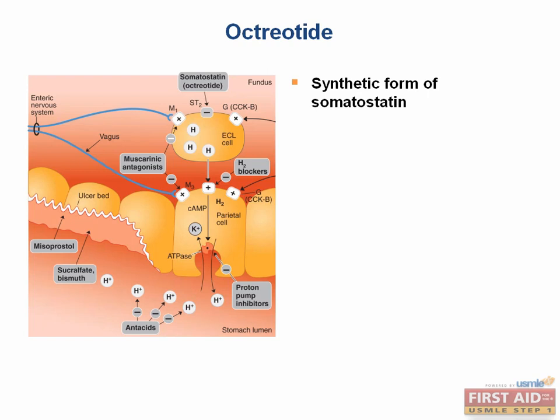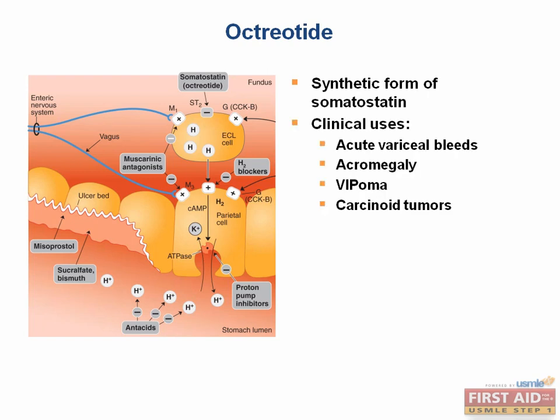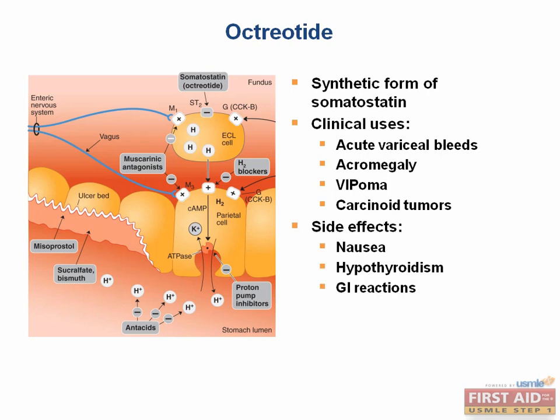From these effects, it can thus be determined that octreotide is used to treat acute variceal bleeds, acromegaly, VIPoma, and carcinoid tumors. It's important to remember its side effects. Side effects are nausea, hypothyroidism, and GI reactions such as cramps and steatorrhea.